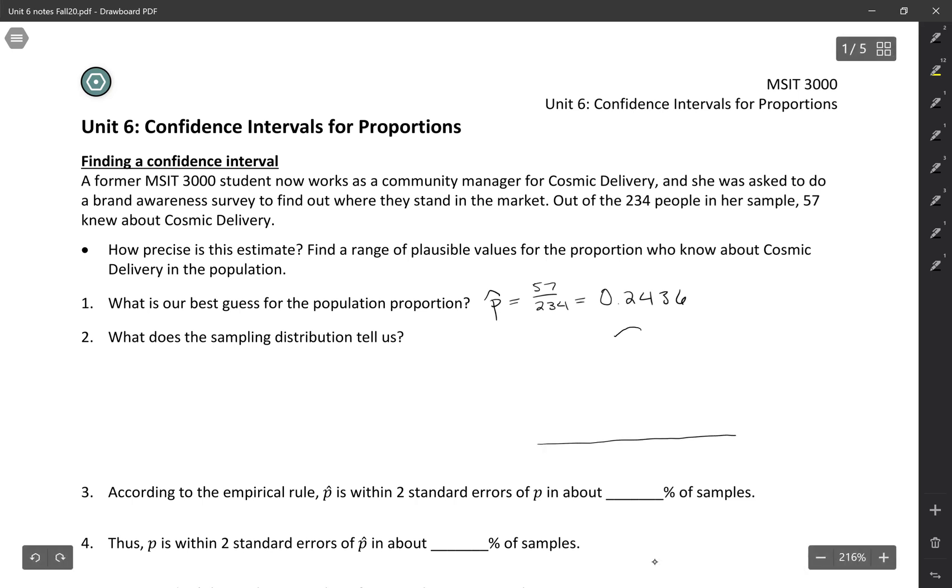So if you remember, a sampling distribution is different from the other distributions that we've learned in this class, because every dot in a sampling distribution is a statistic. In this case, we're thinking about all the different values of p hat that we could get, all the different sample proportions that we could get, based on one parameter. So these would be centered around the true parameter, and we'll mark that as p.